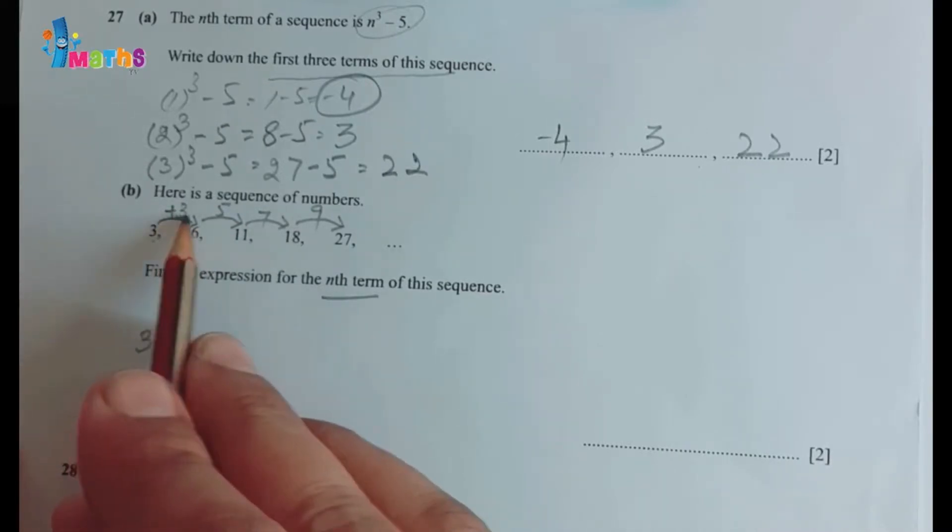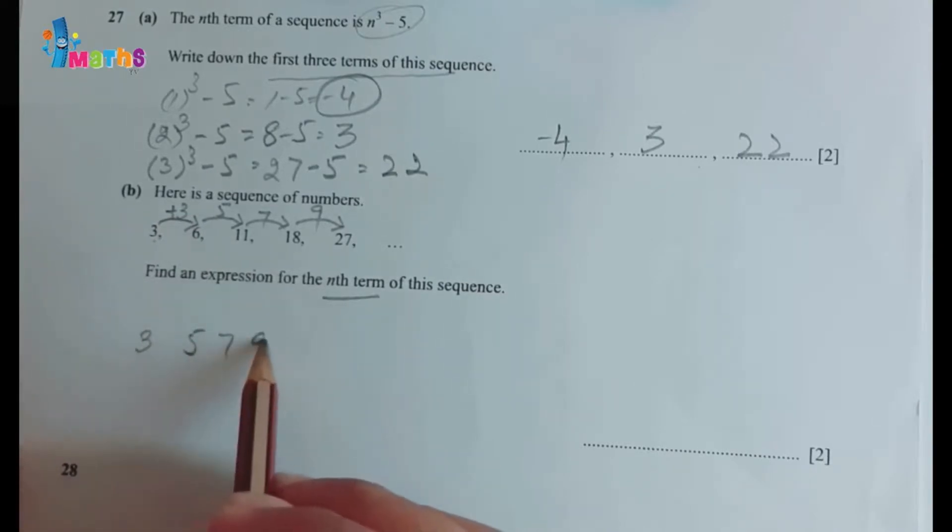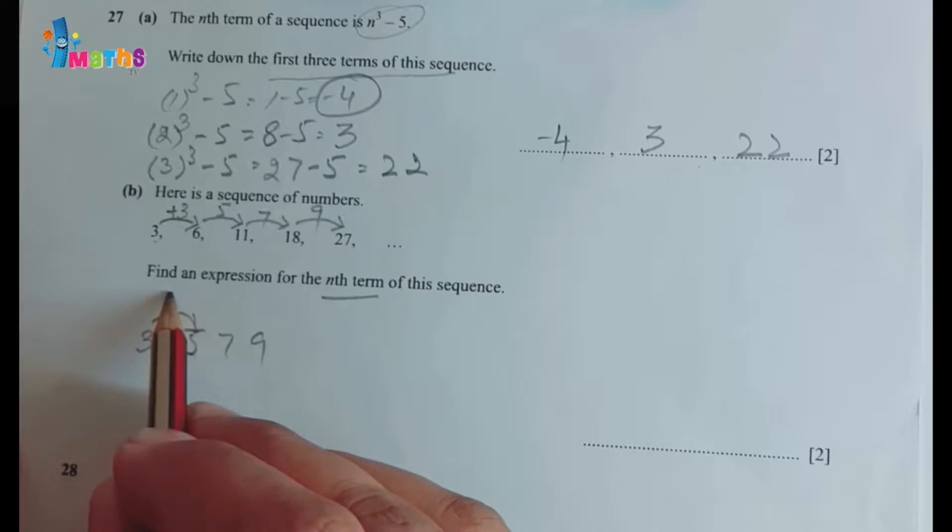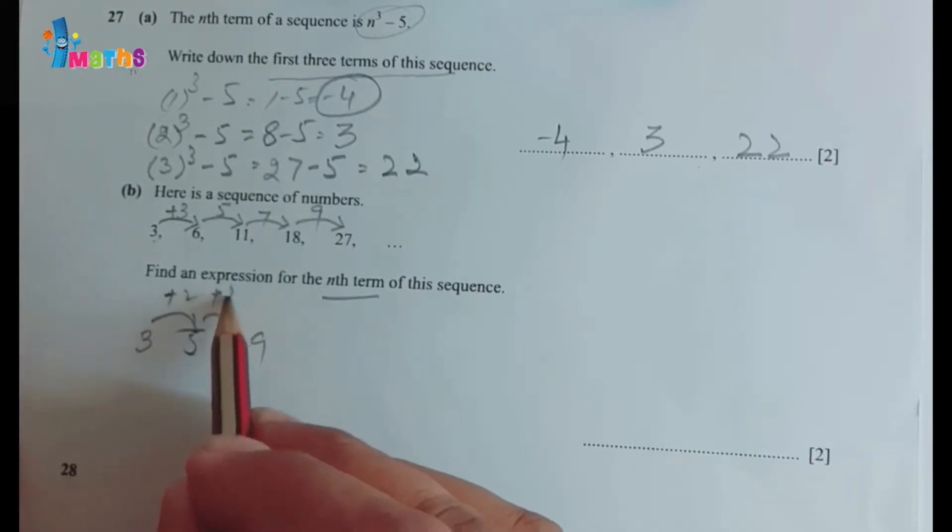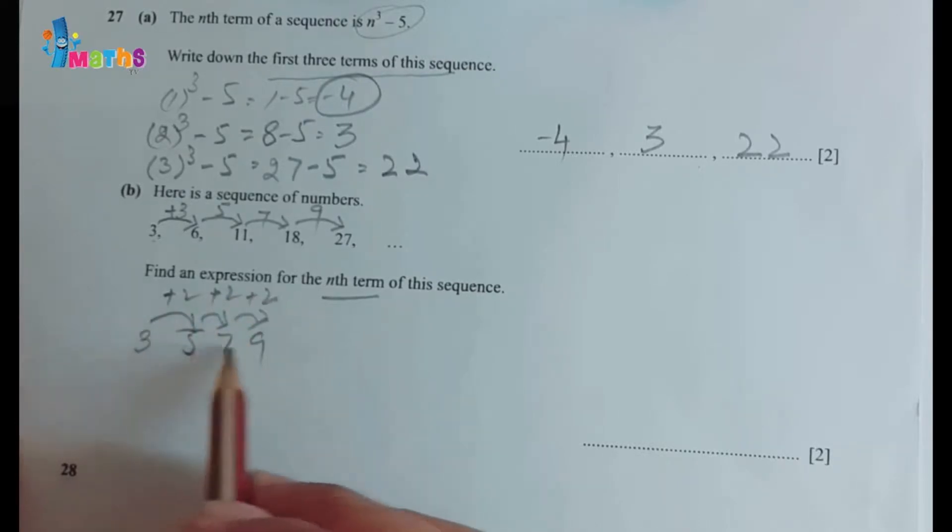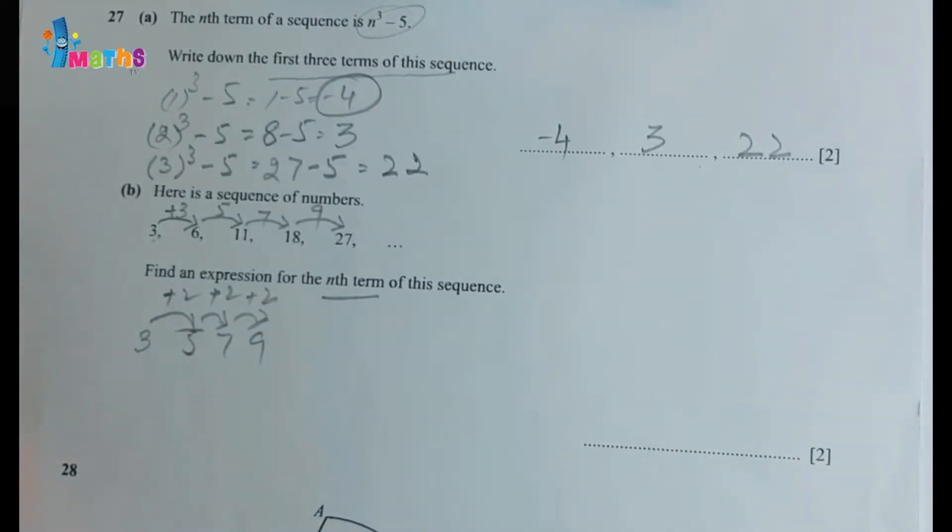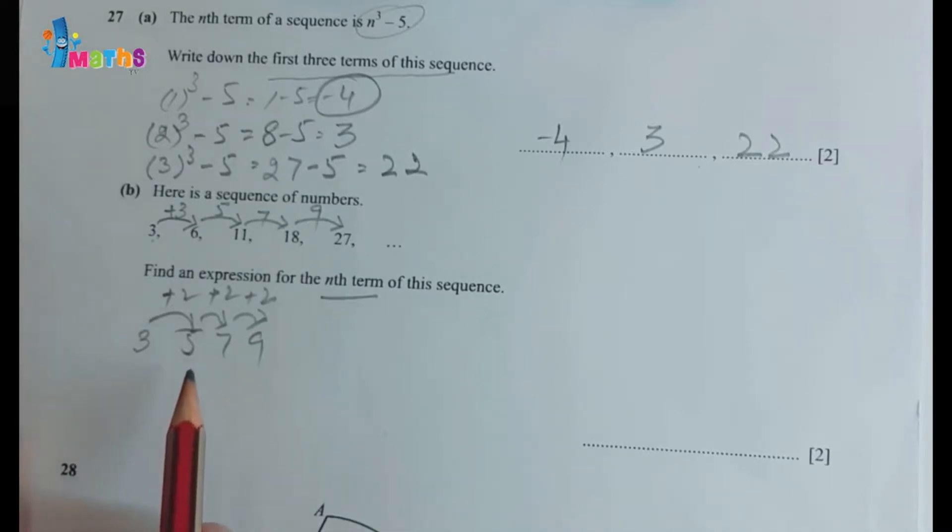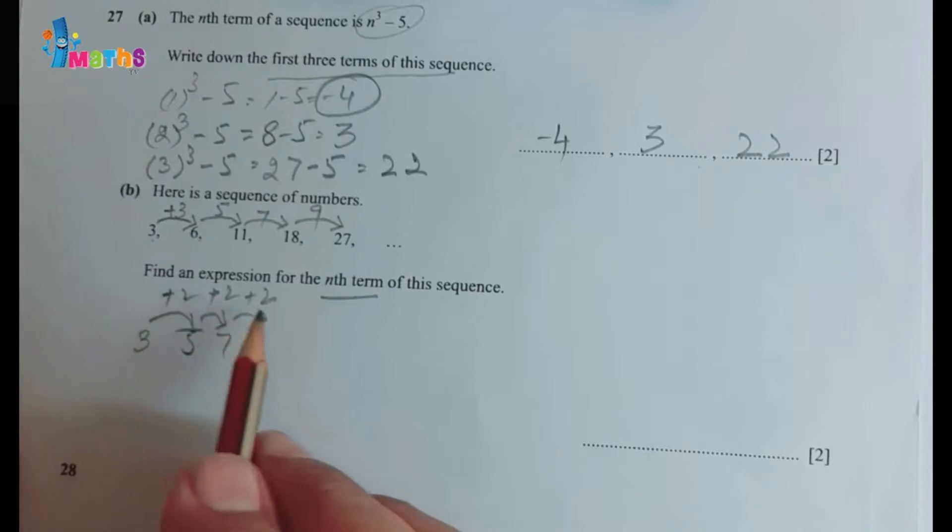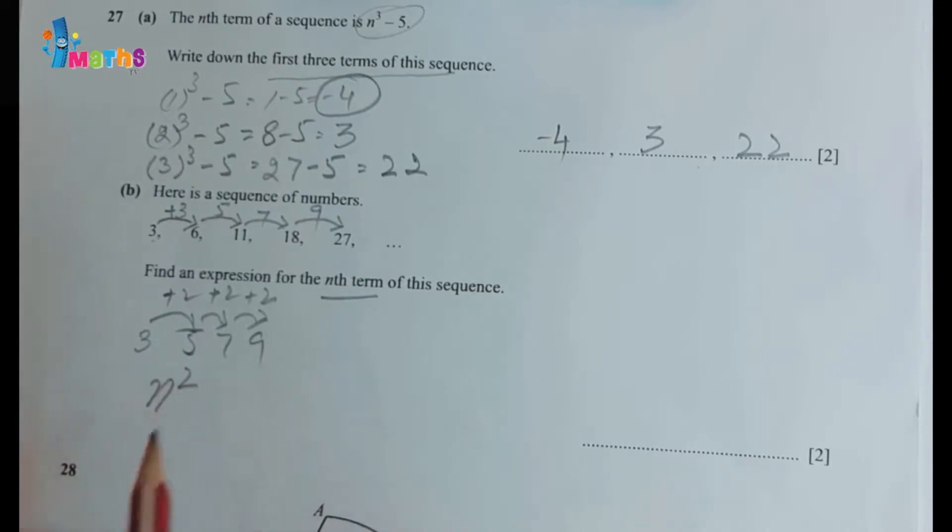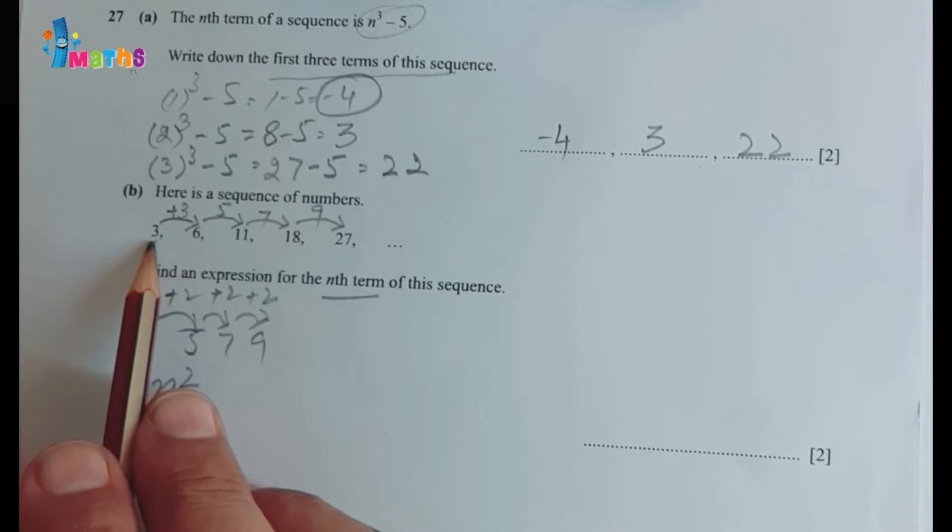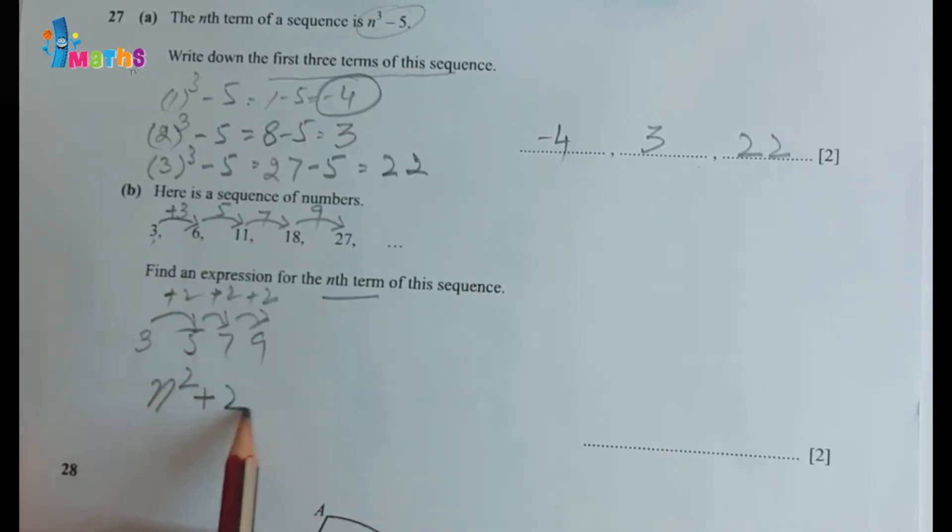The difference between these numbers 3, 5, 7, and 9—if we check second-order difference, this will be plus 2, this will be plus 2, next will also be plus 2. So second-order difference is plus 2. This shows that n² is involved in the nth term. If we replace n equals 1, we will get 1, but as we see our first term is 3, so we will add 2 here.